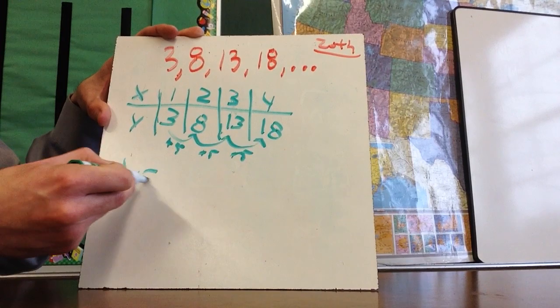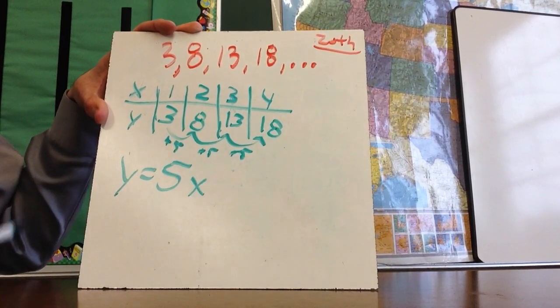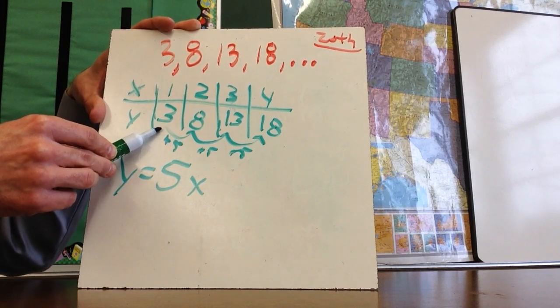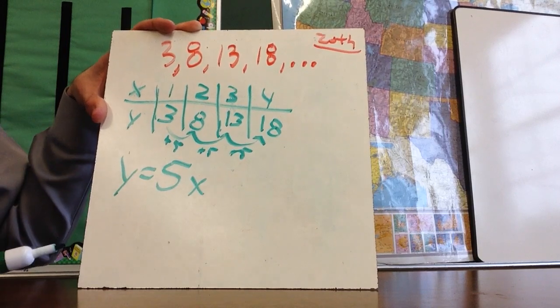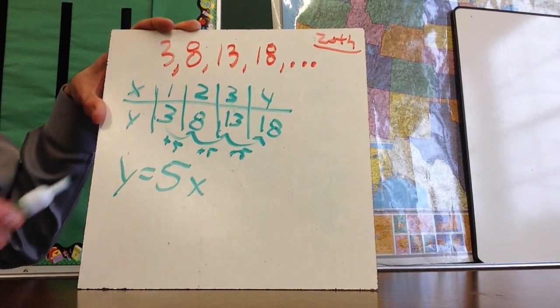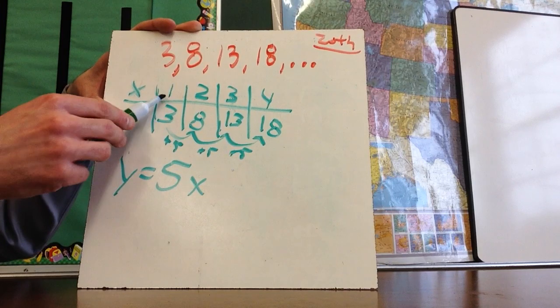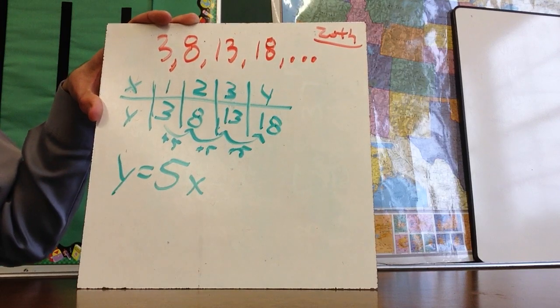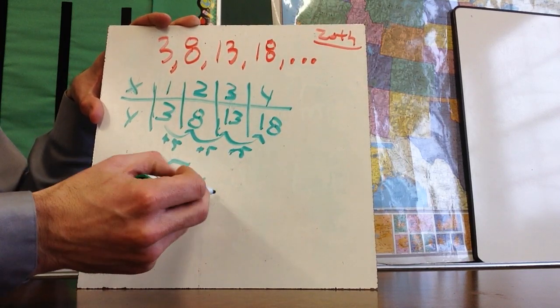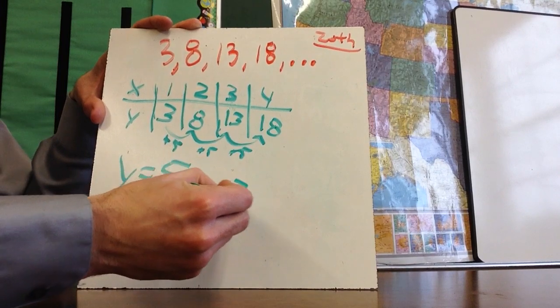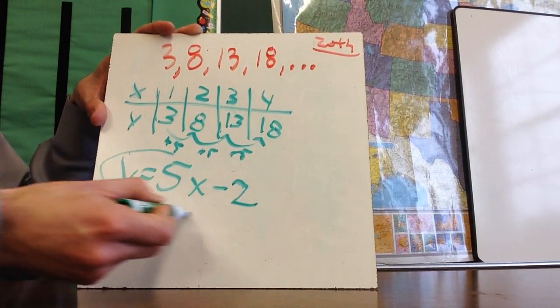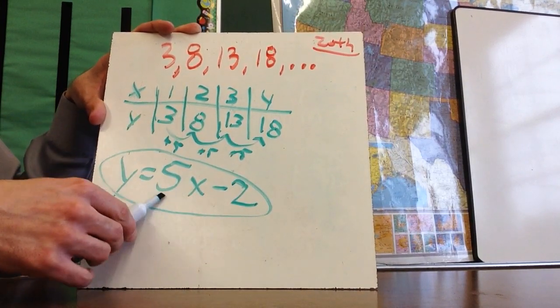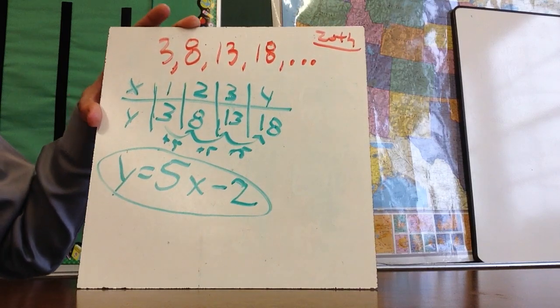All right, so the common difference is going to be plus five. So that means that this is going to be Y equals five times X. But when I substitute one in for X, it does not give me the Y that I want. When I substitute two in for X, it does not give me the Y that I want. So I'm going to need to do something behind this. This is going to become, when I put a one in here, one times five is five, but I want it to be three. So what could I add or subtract to five to get to three? I would need to subtract two. And so now I have five X minus two. This is very similar to the in and out boxes that you did.